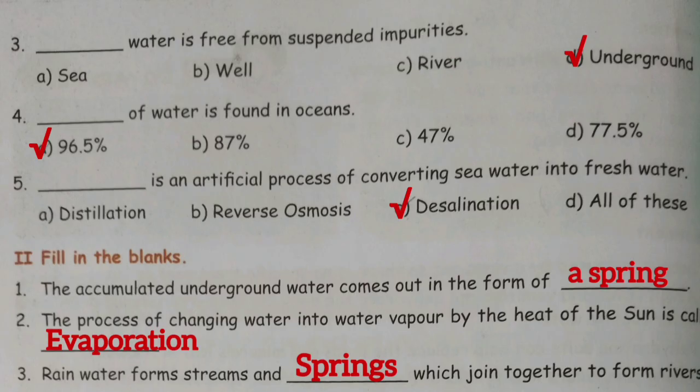Next one: dash water is free from suspended impurities. Answer: option D, Underground.